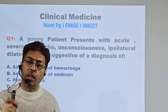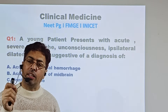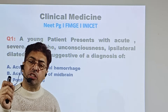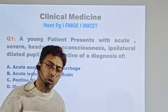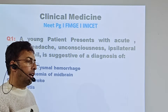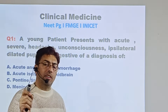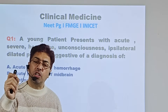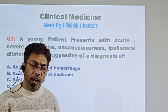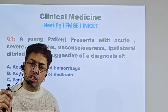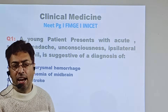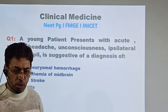This presentation — with blood going into the ventricles of the brain — is classic of subarachnoid hemorrhage. I am not talking about other types of hemorrhage like subdural, epidural, or intracerebral hemorrhage. In subarachnoid hemorrhage, the blood vessels undergo pathological dilatation and rupture, and the classical presentation is ipsilateral dilated pupil, unconsciousness, and severe headache.